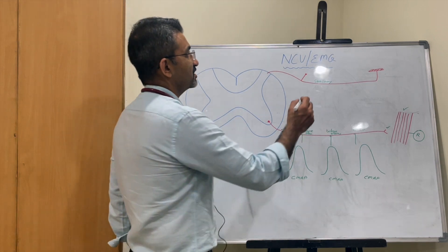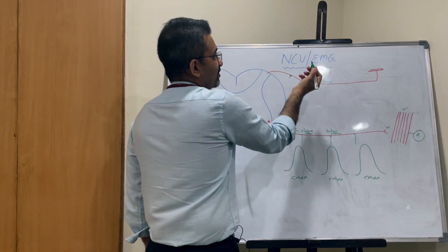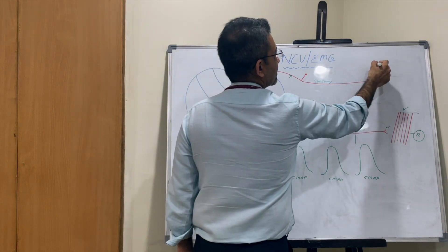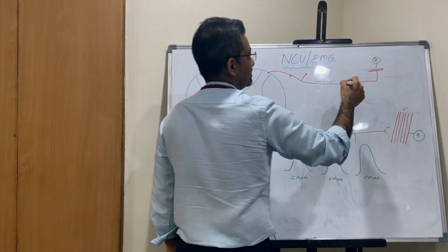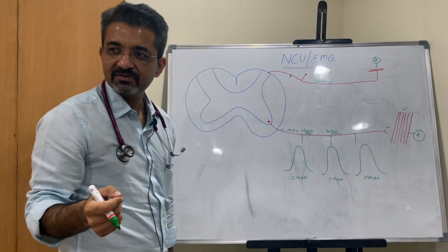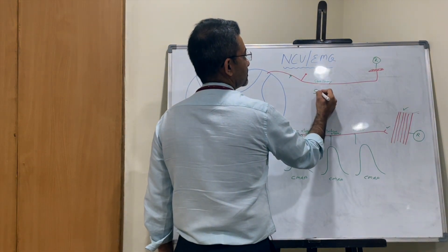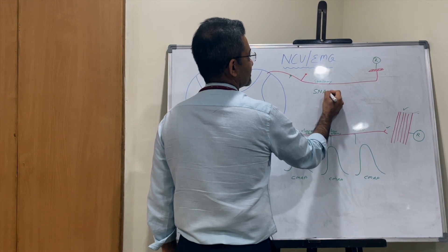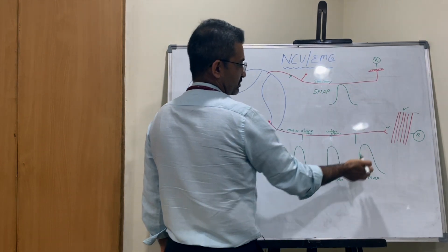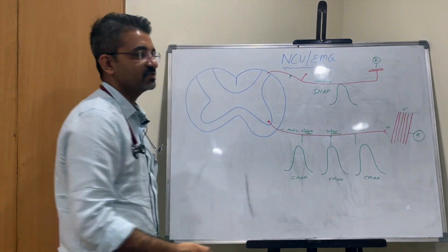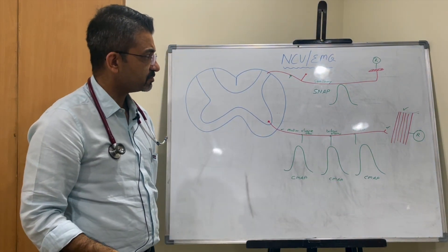Similarly, for sensory nerves, when you stimulate at one place and record at the skin, you record SNAP — sensory neuronal action potential — which is an analog of CMAP. It is a bit challenging because sensory nerves are small, but SNAP is the equivalent of CMAP for sensory nerves.